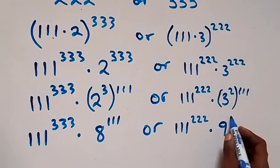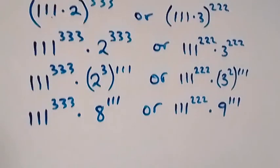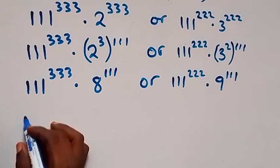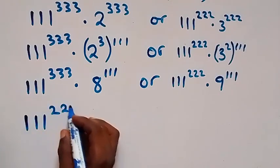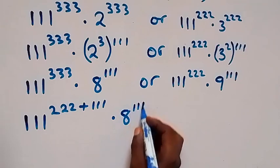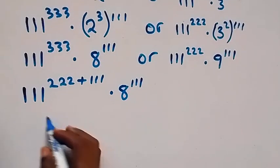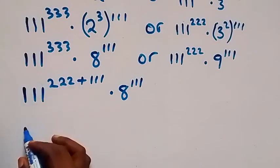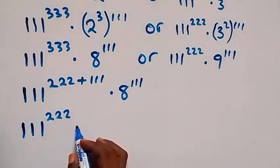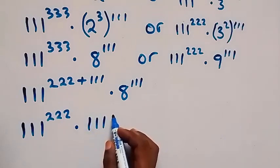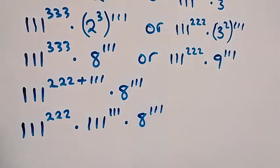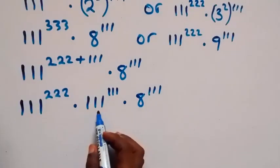This will be 9 raised to power 111. Then on this side we can separate this as 222 plus 111, that is we can write this as 111 raised to power 222 plus 111, times 8 raised to power 111. Then applying the law of indices we can write this as 111 raised to power 222, times 111 raised to power 111.